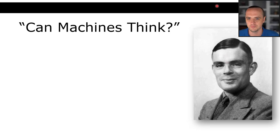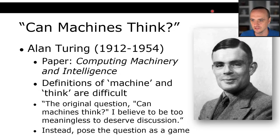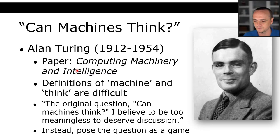Who knows who this person is? This is Alan Turing — basically the father of modern computer science. Alan Turing, whose life was tragically cut short, basically won World War II for the Allies with his code-breaking. He wrote a paper called 'Computing Machinery and Intelligence' before the first computer was invented, already asking questions about AI. Alan Turing said that even the definition of 'machine' is difficult, and the definition of 'think' is also difficult.